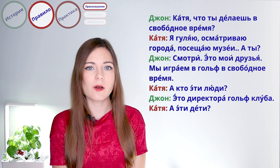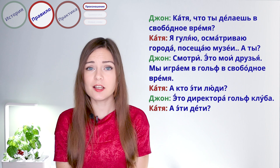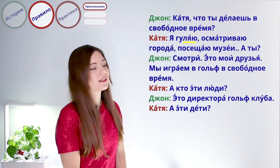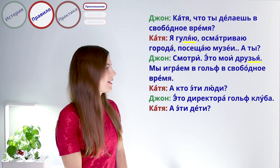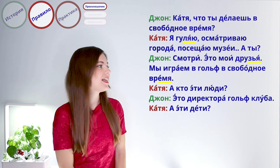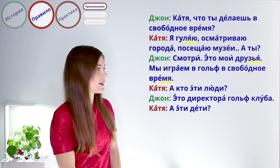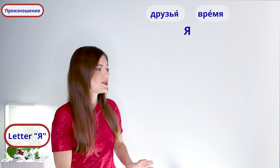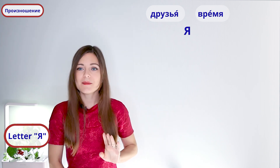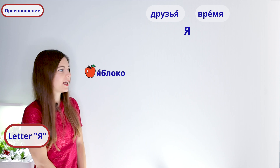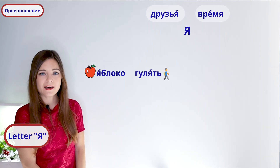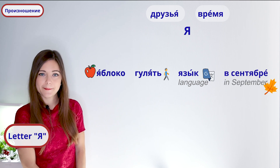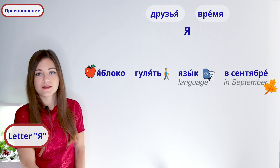In our dialogue we have some words with the letter я. Can you find them? Right: гуляю, друзья, время. Let's have a look at how we pronounce this letter. Друзья, время, я. Actually, in Russian there are different kinds of я. Some examples: яблоко, гулять, язык, в сентябре. Pay attention to how I pronounce these words.